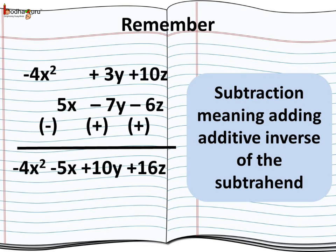Then, 3y plus 7y which is equal to 10y as 3 plus 7 is equal to 10. Next, we do 10z plus 6z. 10 plus 6 is 16, so we get the answer as 16z.